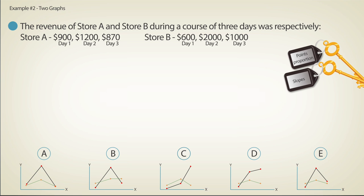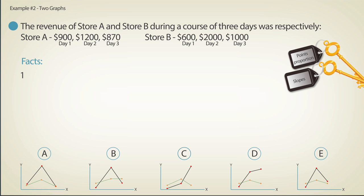We know that the two companies increased their revenue from day one to day two, but while store A had the higher revenue on day one, store B had it on day two. Therefore, we can expect to see two increasing slopes that cross one another. Graphs A and C do not follow this logic and can be eliminated.